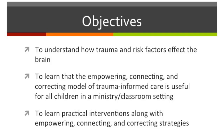We're going to cover three different objectives today. One is to understand how trauma and risk factors affect the brain — the brain chemistry that experts have helped us understand over the last 10 to 15 years. Two is to learn how the empowering, connecting, and correcting model of trauma-informed care is useful for all children in a ministry or classroom setting — you don't have to have two sets of approaches. And three, we're going to talk through some practical interventions along with some empowering, connecting, and correcting strategies.